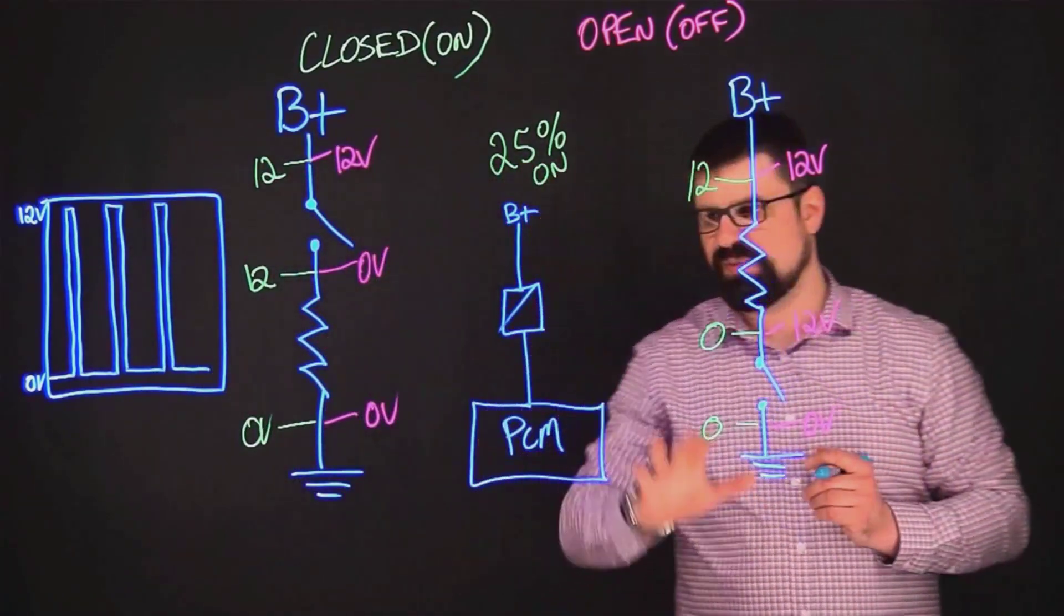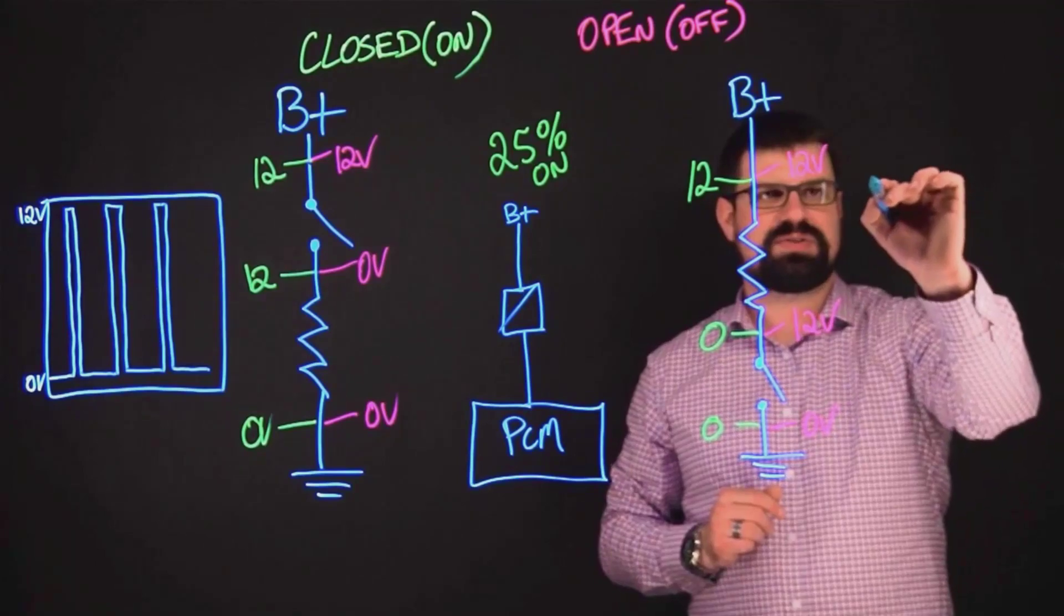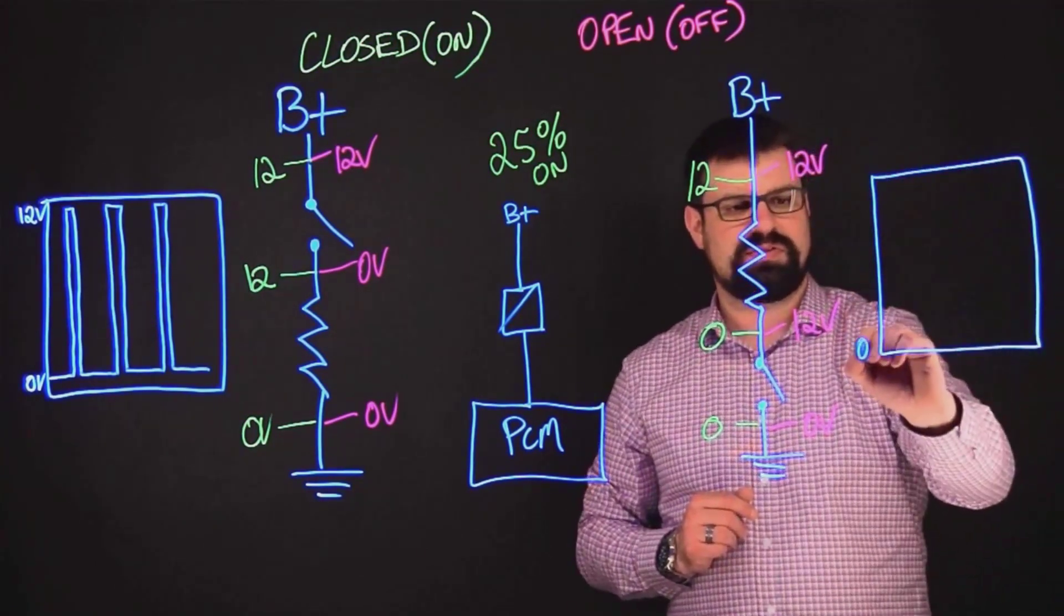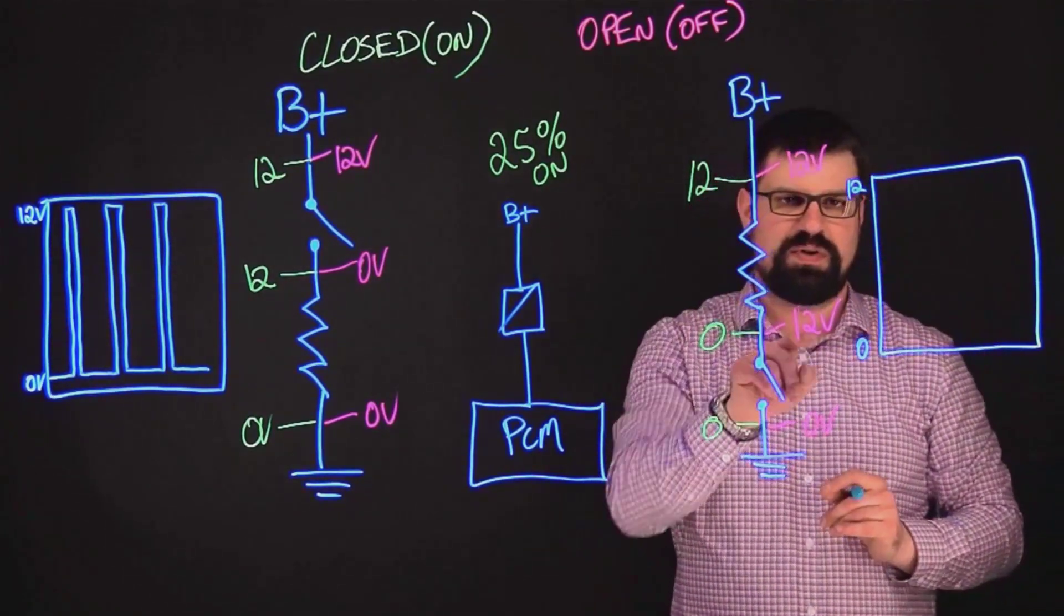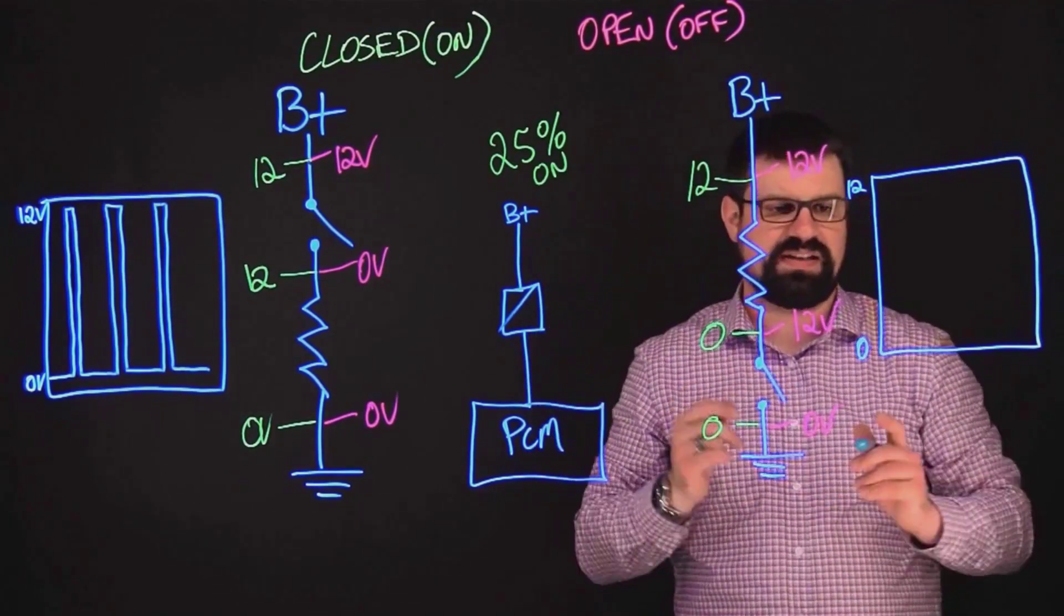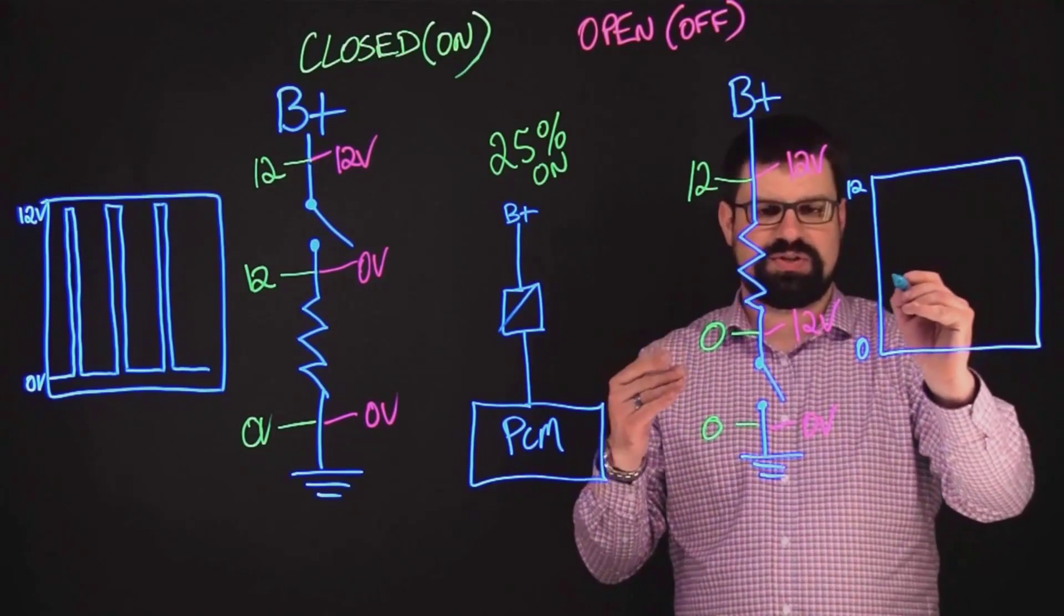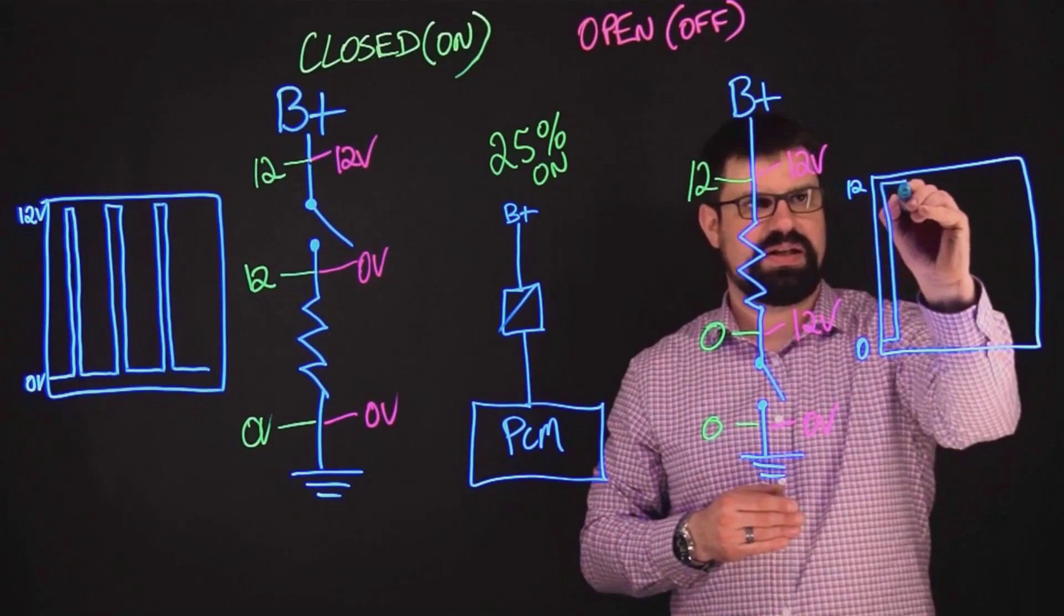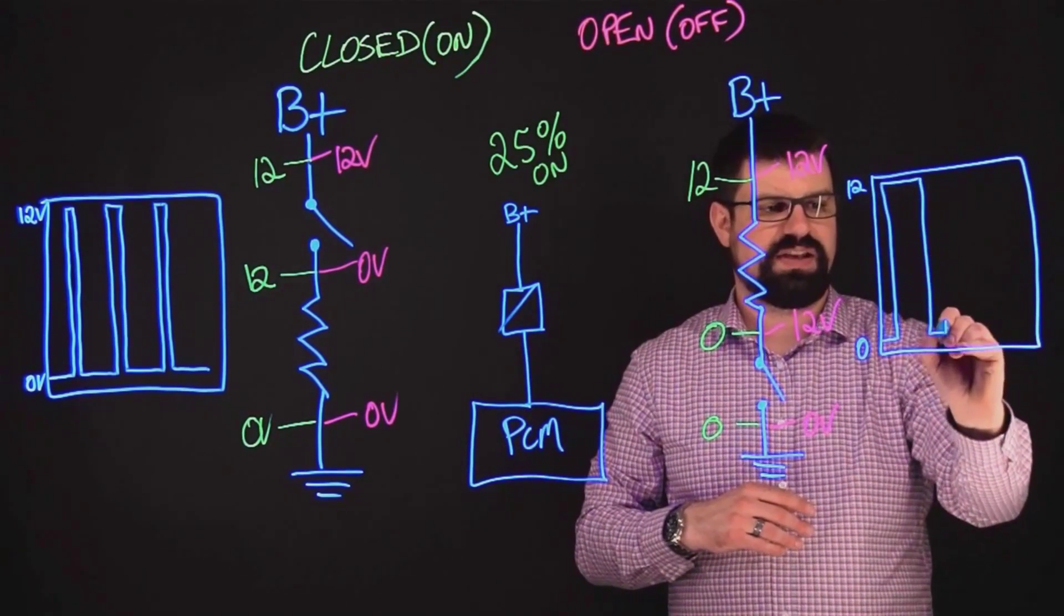Let's go to our switch ground circuit, which by the way, switch ground circuits are much more common on a car, but we still have a lot of switch power circuits. Let's draw another imaginary oscilloscope. Zero, 12. And the thing that's going to change now is 12 volts means off. Zero volts means on. Exact opposite. So when you have a switched ground circuit, you're going to spend a lot more time at 12 volts on this 25% on and less time at zero.